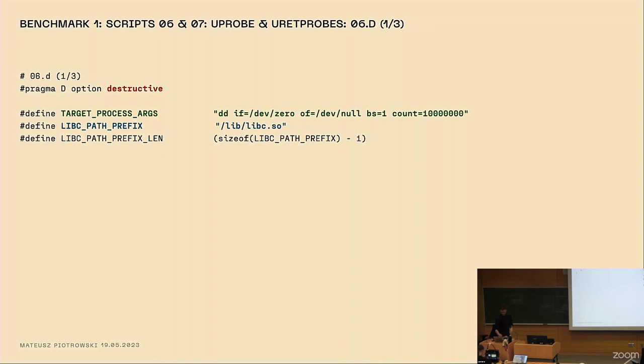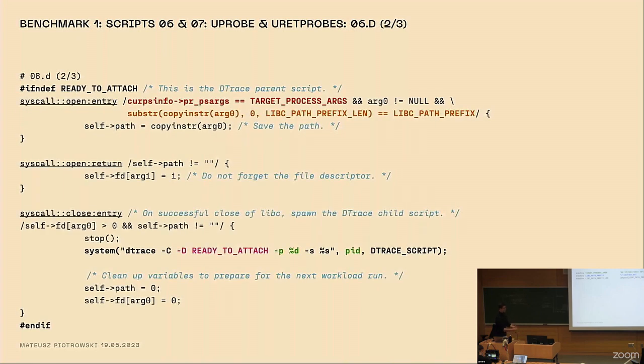So let's see how it looks like. I have it split into three slides. This is the beginning of my DTrace script. First of all, I have to activate the destructive pragma. This is because I'm going to spawn a child process in this DTrace script. And I have some pre-defined constants. The first one gives me the exact process name and arguments that I have to match later on with my probes. And the libc prefix so that I can detect that my workload is actually reading libc at this point.